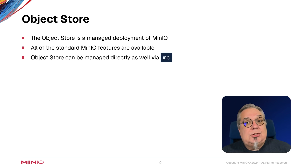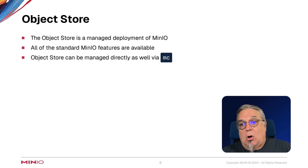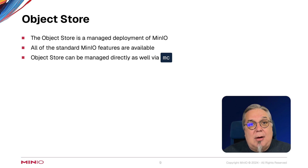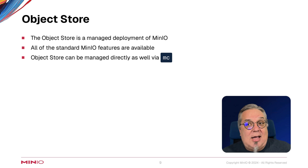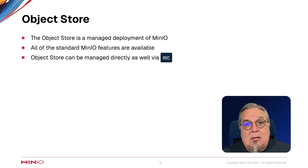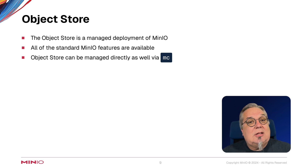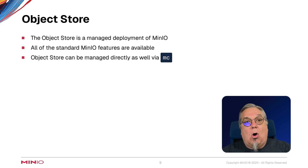The Object Store is a managed deployment of MinIO. It performs all the standard functions of a MinIO object store. Object stores can also be managed via the command line MC client. But the purpose of the console is to allow you to have this global management of all of your object stores that you deploy.